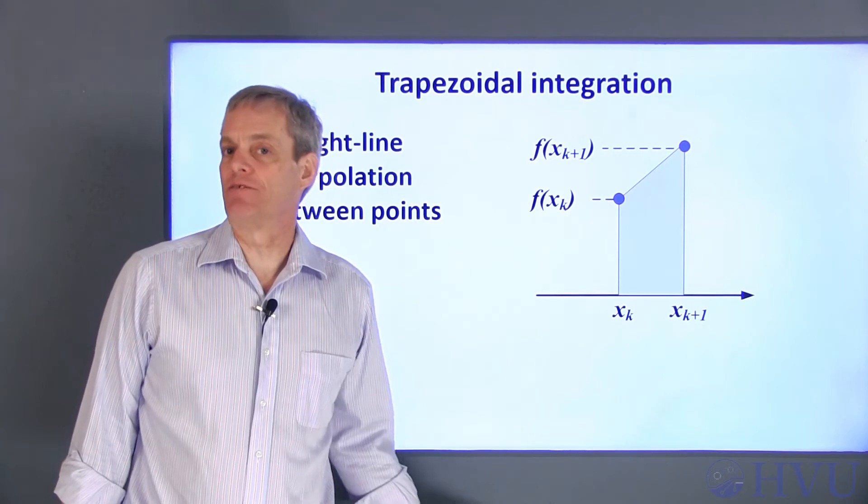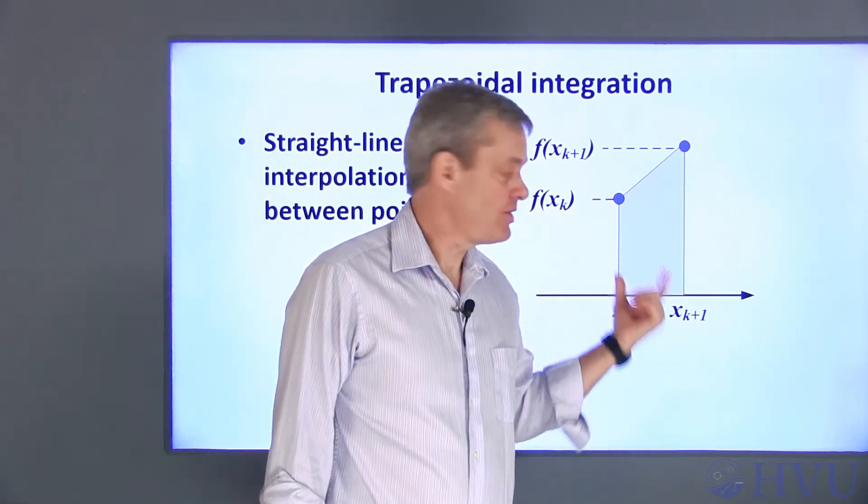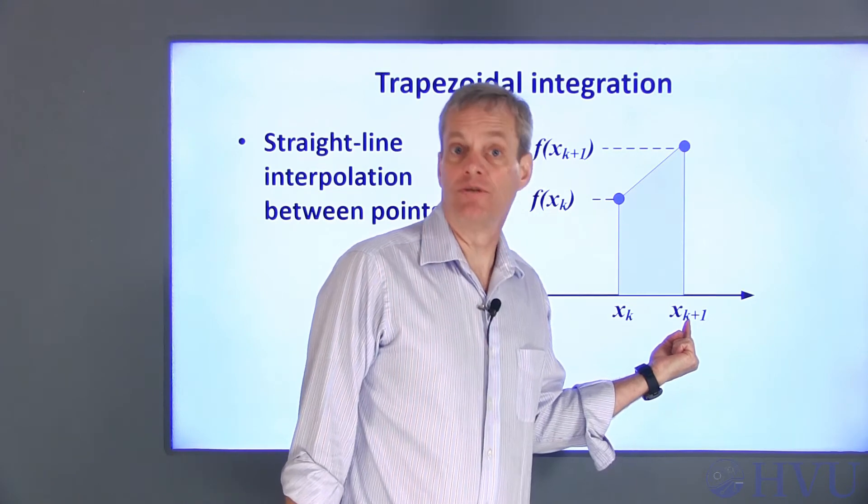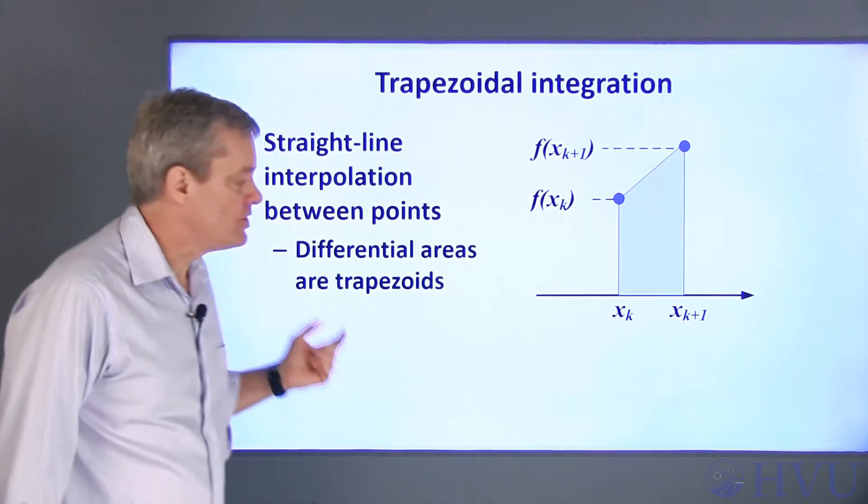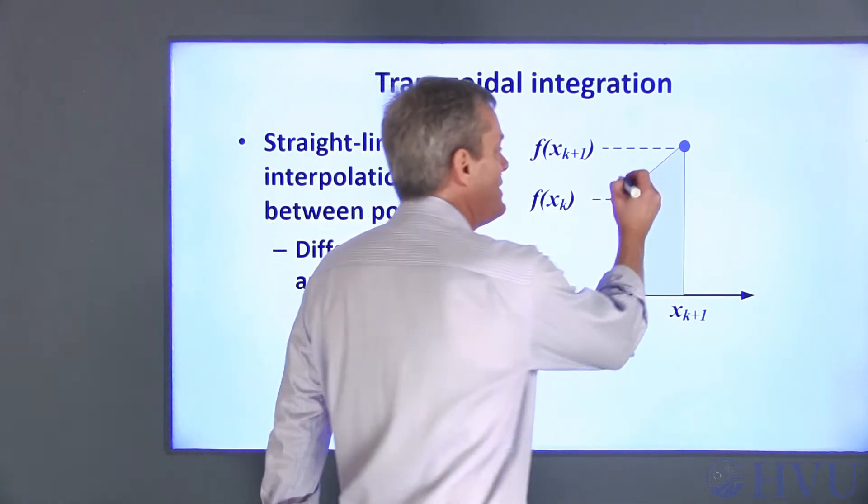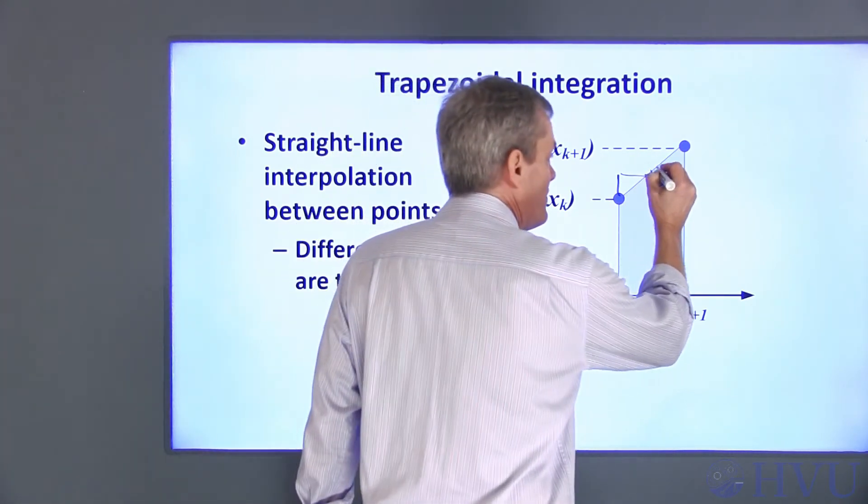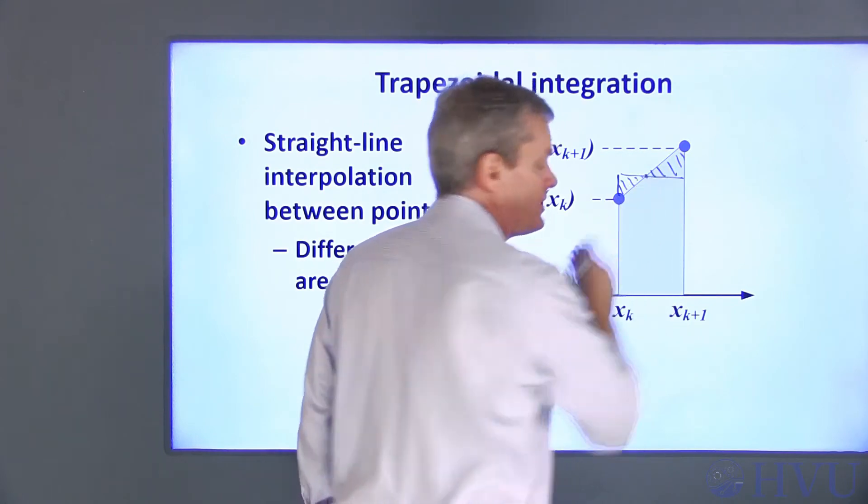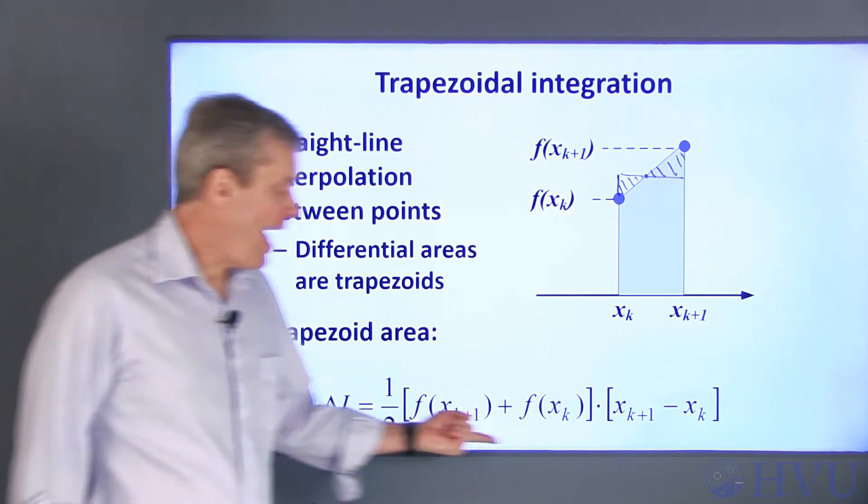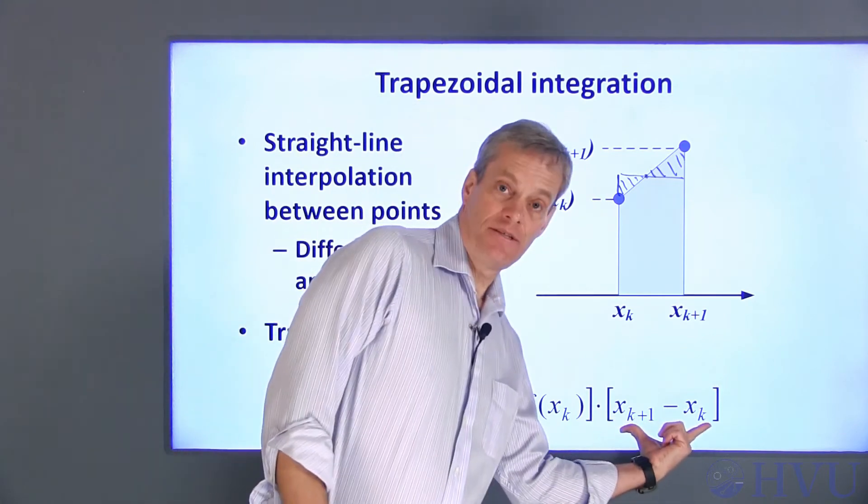Now let's develop trapezoidal integration more thoroughly. Trapezoidal integration is based on a linear interpolation between adjacent points. So the differential area between the kth and the k plus 1th point looks like this. It's just a little trapezoid. Its area is equivalent to the area of a rectangle whose height is the average value of the function at the end points, since the area of this little triangle cancels the area of this little triangle. The average value of the function is one half of the sum of the values at the end points, and this is the base of the trapezoid.